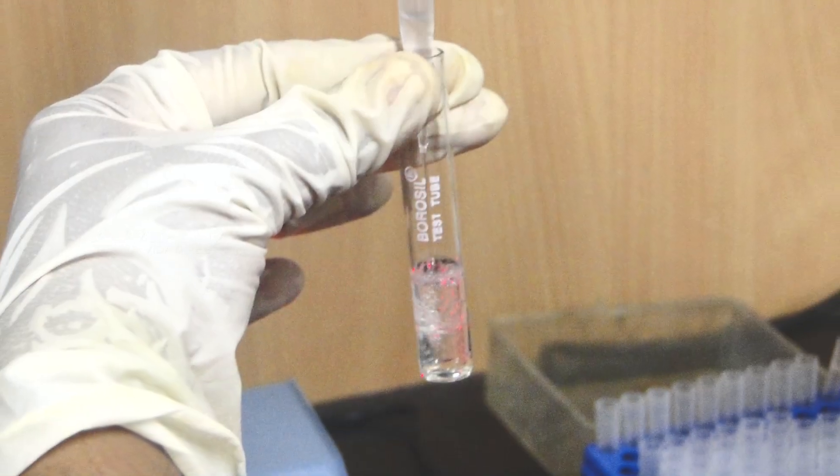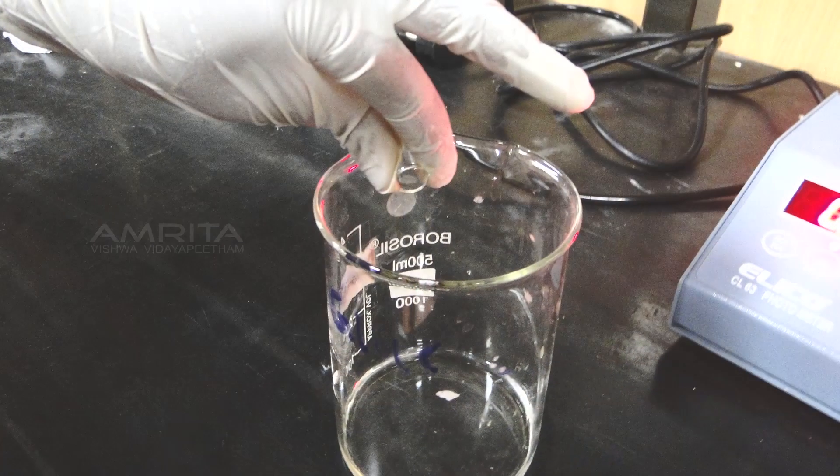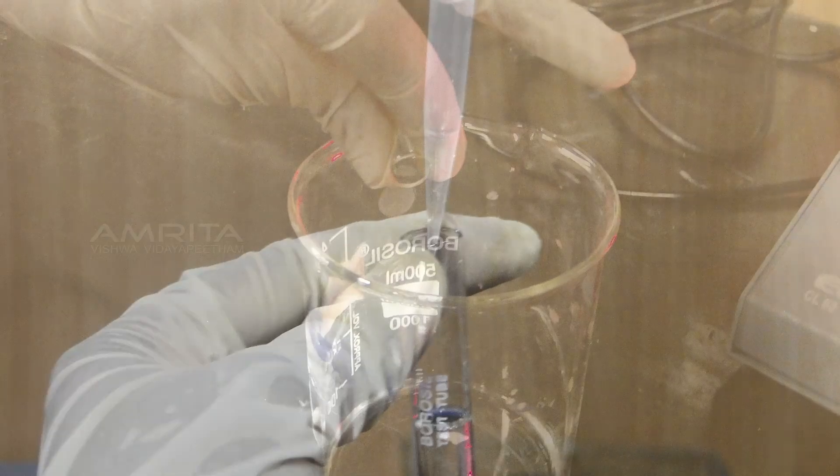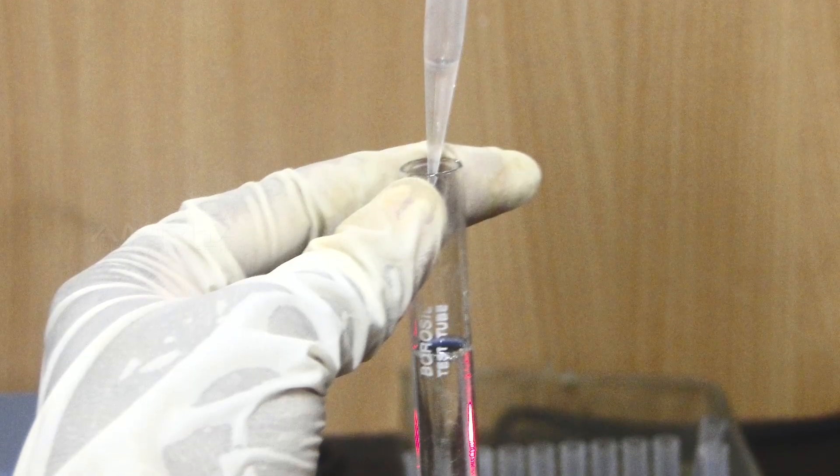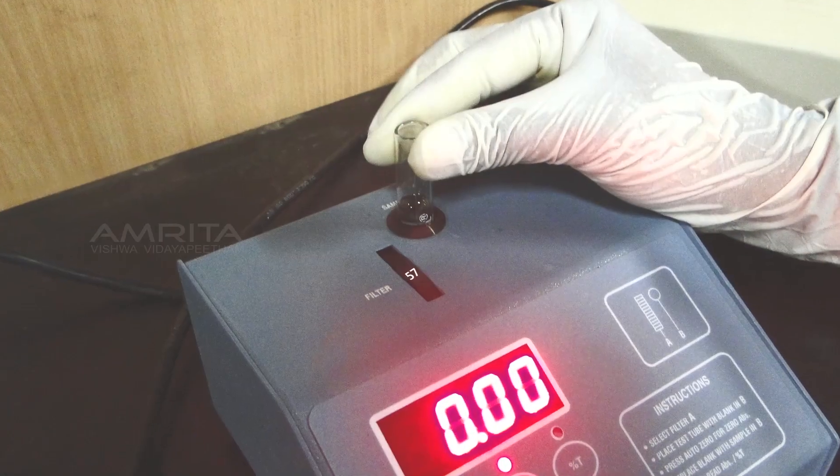Rinse the cuvette with the blank solution. Drain off the solution by inverting the cuvette. Fill the cuvette to the appropriate mark with the blank solution and keep it in the slot provided on the colorimeter.